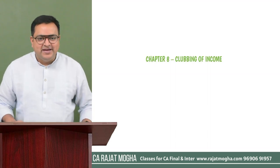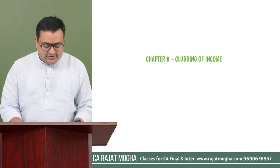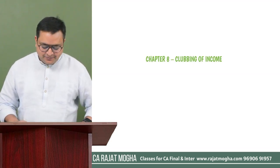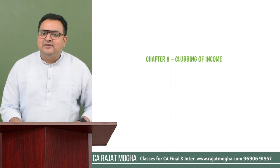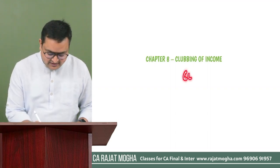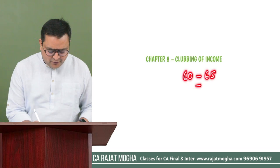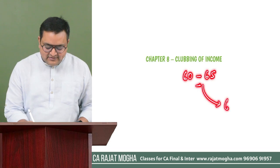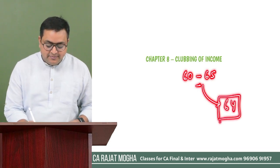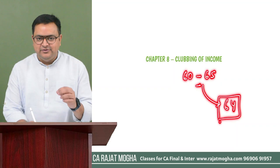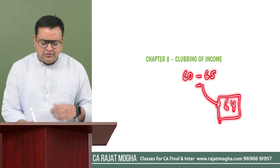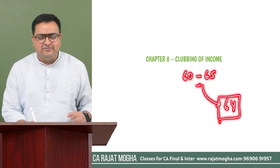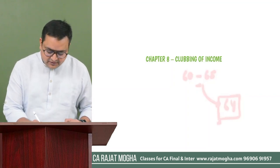Today we are starting with another interesting chapter — a very small, easy chapter: clubbing of income. It covers sections 60 to 65, all very small sections. The most important section for examination purposes is section 64. The other sections are very small and can be revised within five minutes.